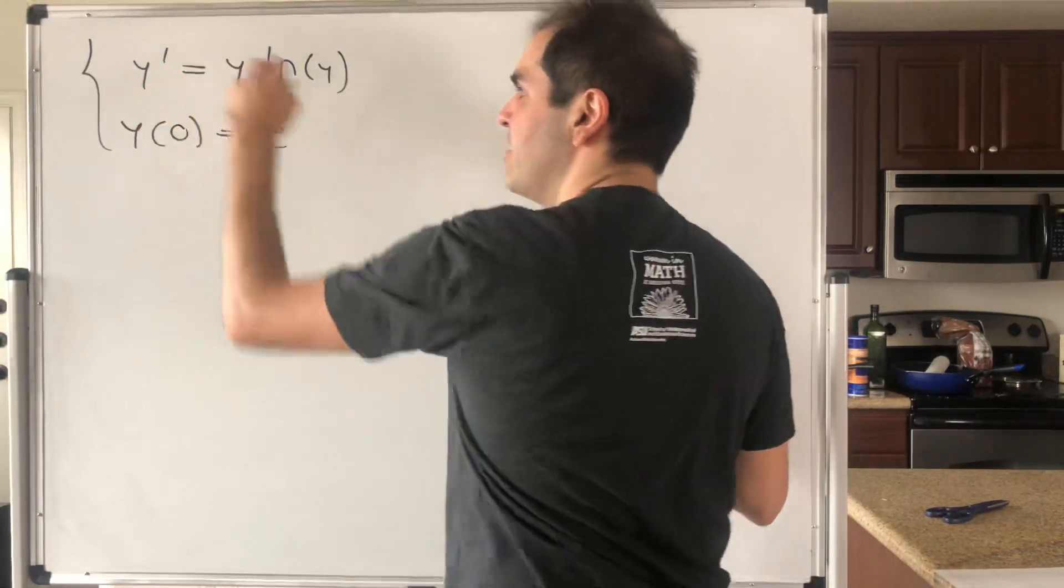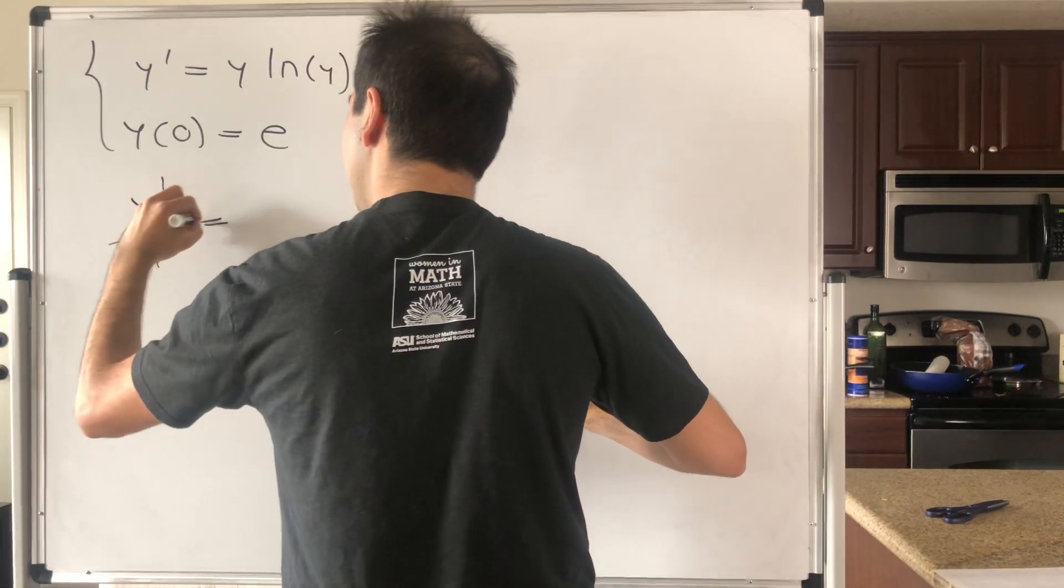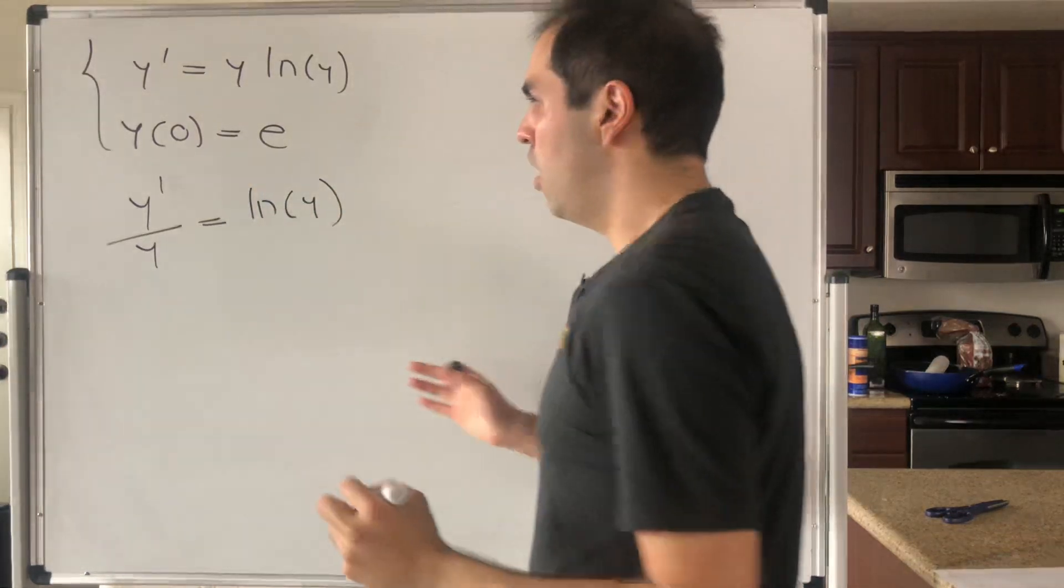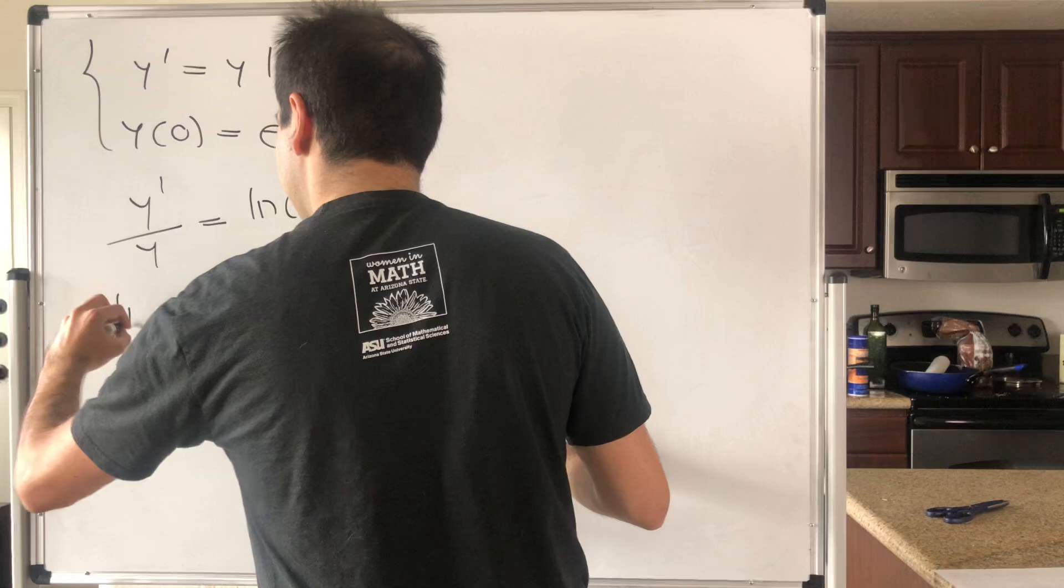So first of all, let's divide by y here to get y prime over y equals ln(y). However, this itself is a derivative, so it's the derivative of ln(y).